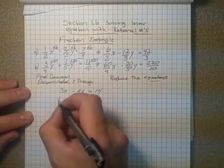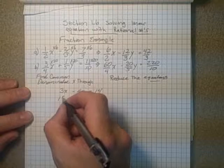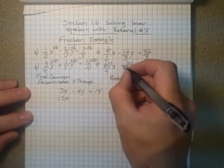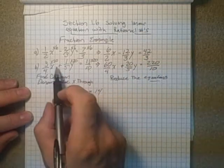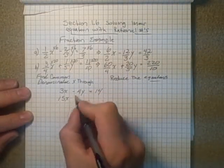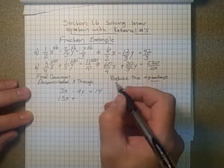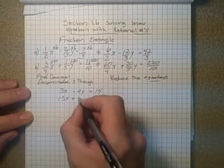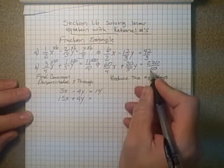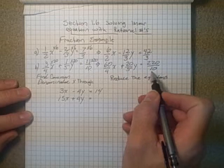60 over 4, that's 15x. Oops, this is a plus sign here, right? Plus sign, plus sign, make sure we don't make those mistakes. This would be plus sign. So 20 over 5y, that would be 4y equals 22, 220 over 10.